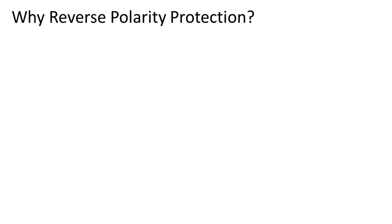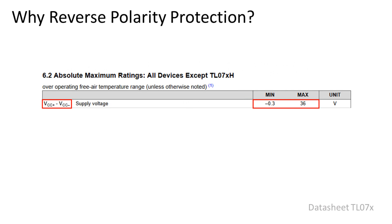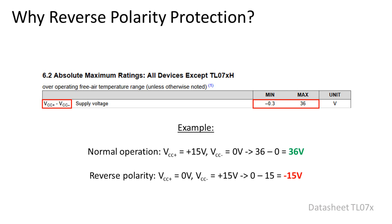But first, why do we need polarity protection? Many ICs, like op-amps, have limits to their supplies. These are stated in the maximum ratings in the datasheet. If you go beyond them, you will risk damaging the chip. The easiest way to break them is by simply reversing the expected polarity on the supply pins.